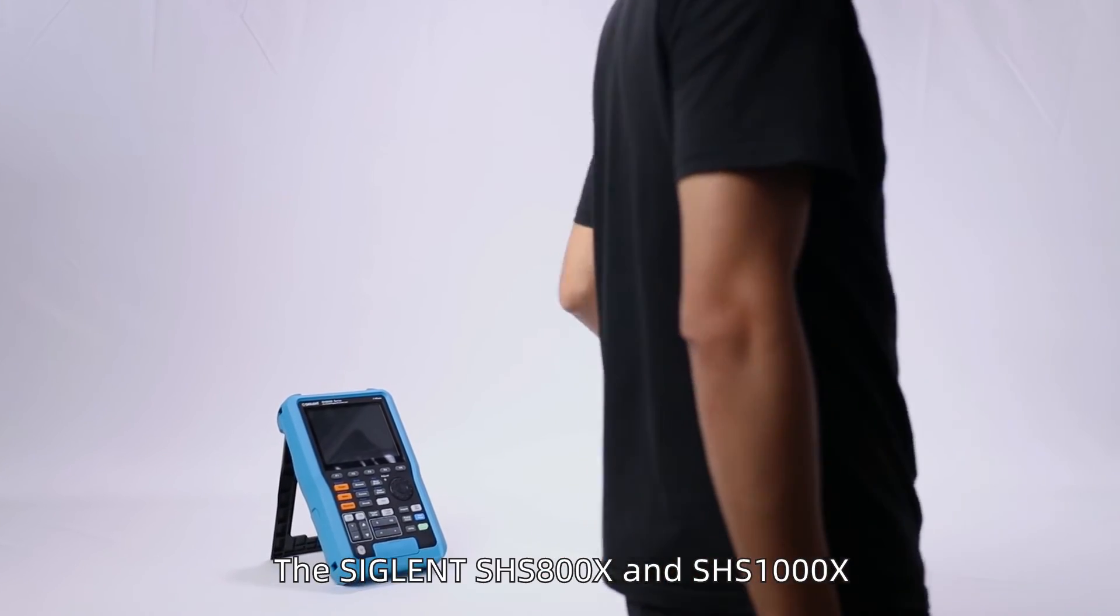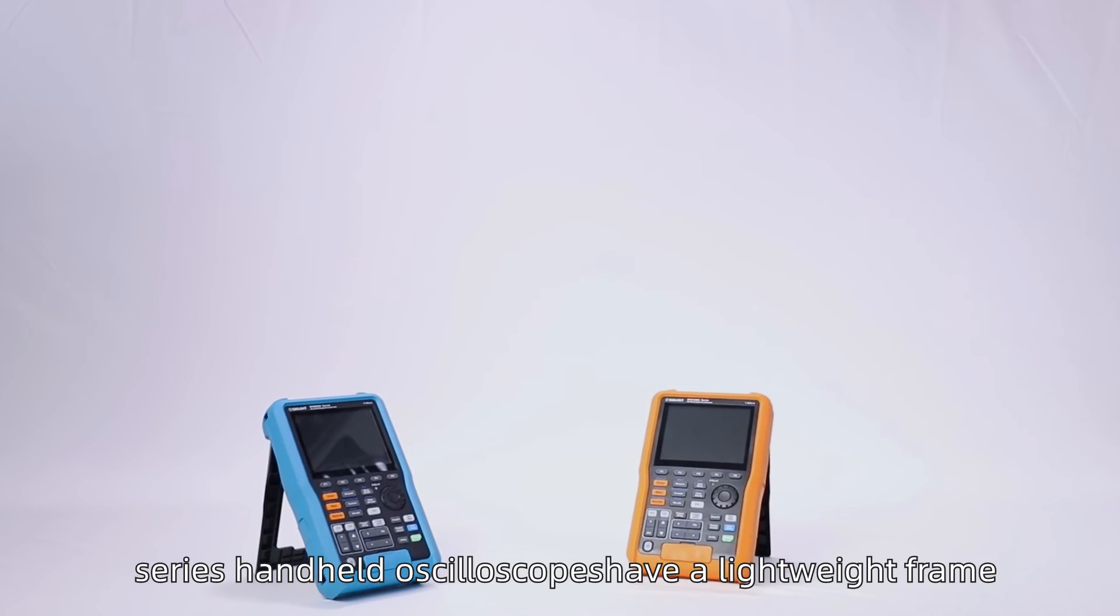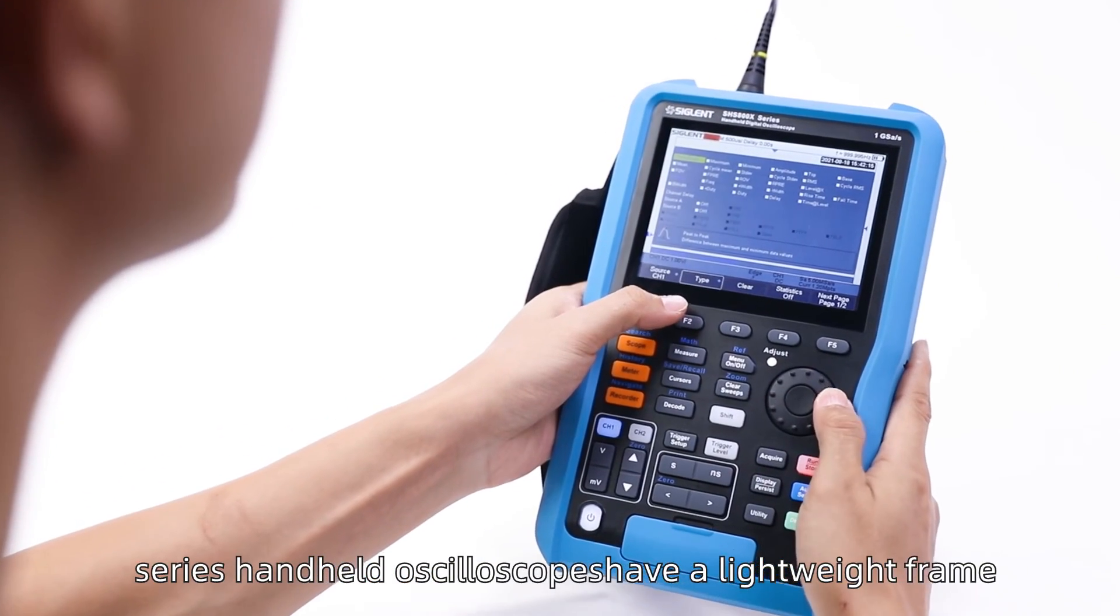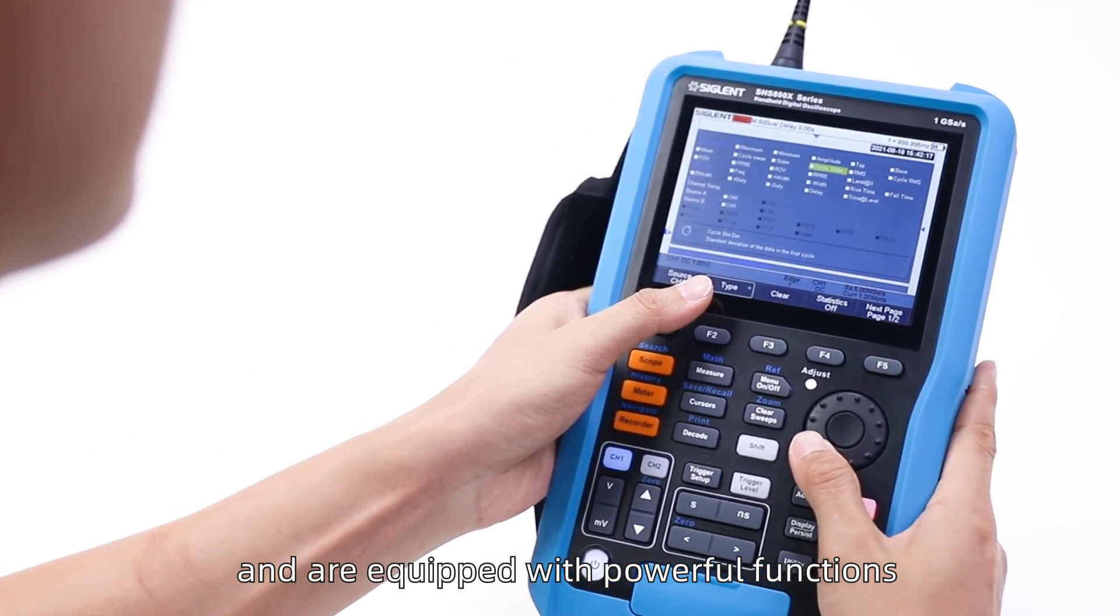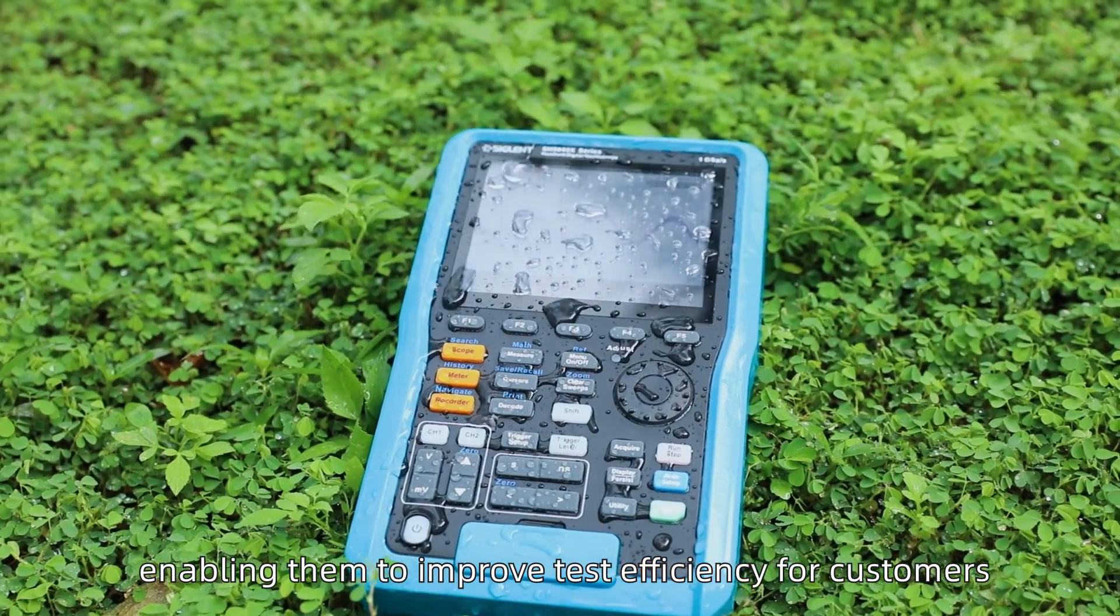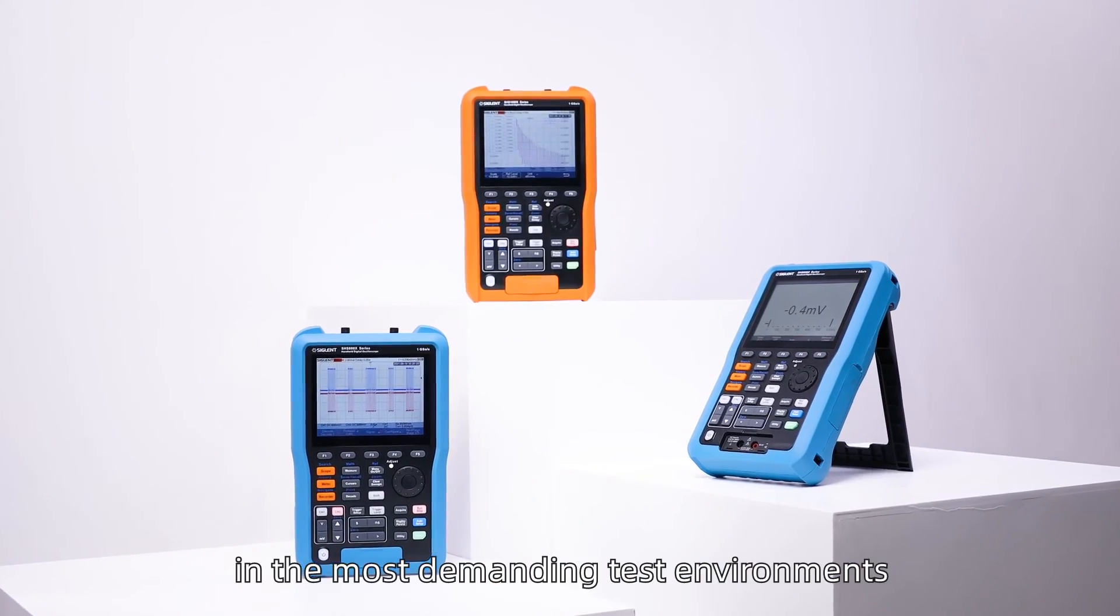The Siglent SHS800X and SHS1000X series handheld oscilloscopes have a lightweight frame and are equipped with powerful functions, enabling them to improve test efficiency for customers in the most demanding test environments.